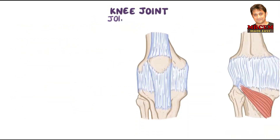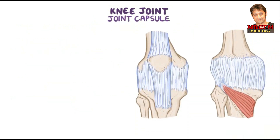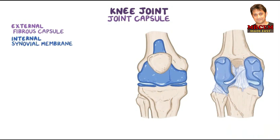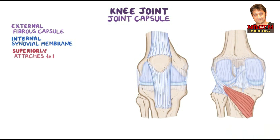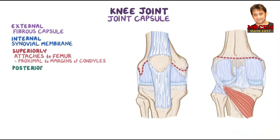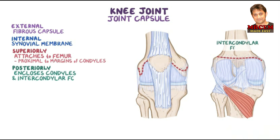The knee joint is surrounded by a joint capsule, which has an external fibrous capsule and an internal synovial membrane. Superiorly, the fibrous capsule attaches to the femur just proximal to the articular margins of the condyles. Posteriorly, the fibrous layer encloses the condyles and the intercondylar fossa and has an opening for the tendon of the popliteus.